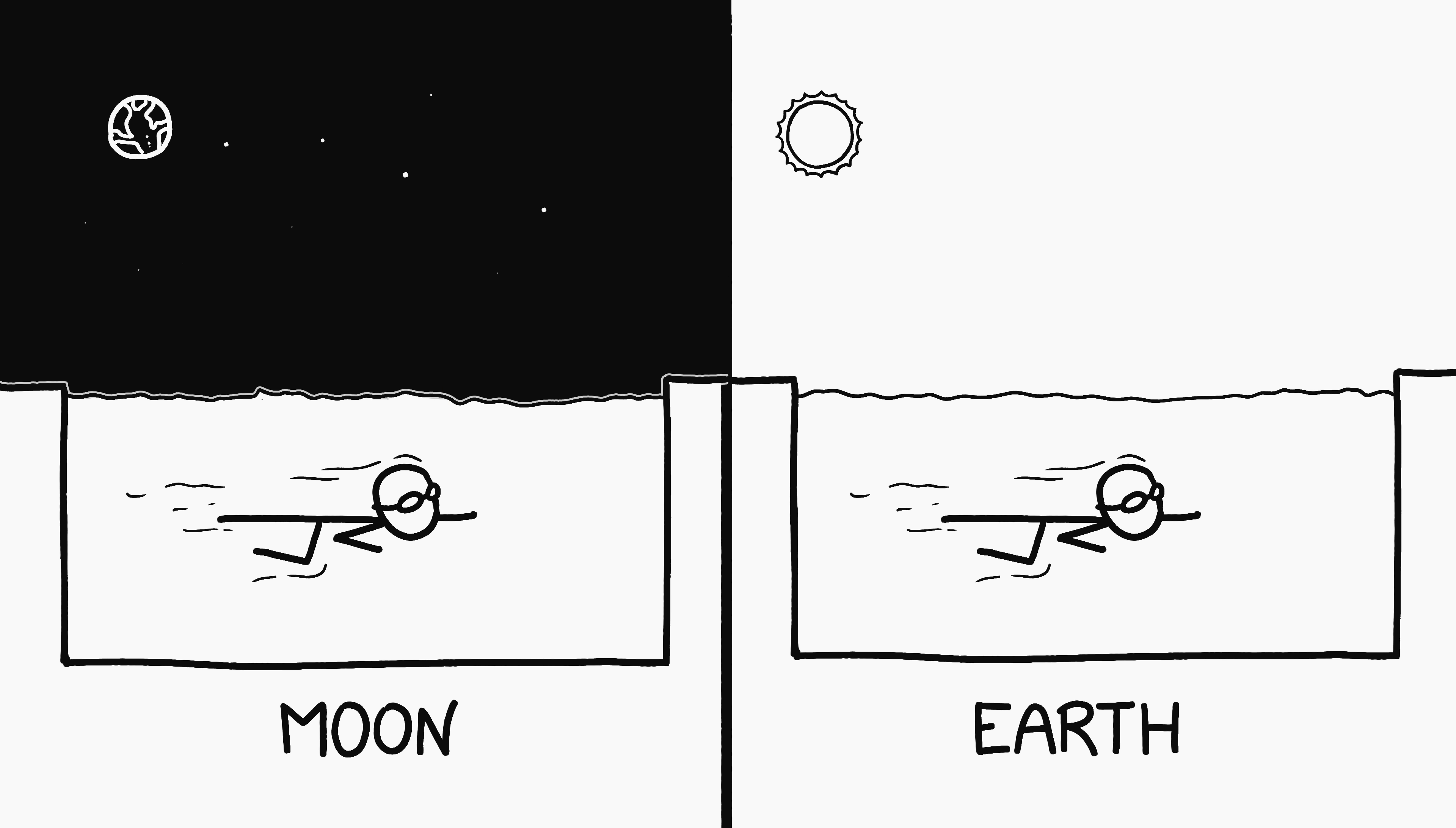Swimming underwater would also feel pretty similar. The inertia of the water is the main source of drag when swimming, and inertia is a property of matter, which is independent of gravity. The top speed of a submerged swimmer would be about the same on the moon as here, about 2 meters per second.